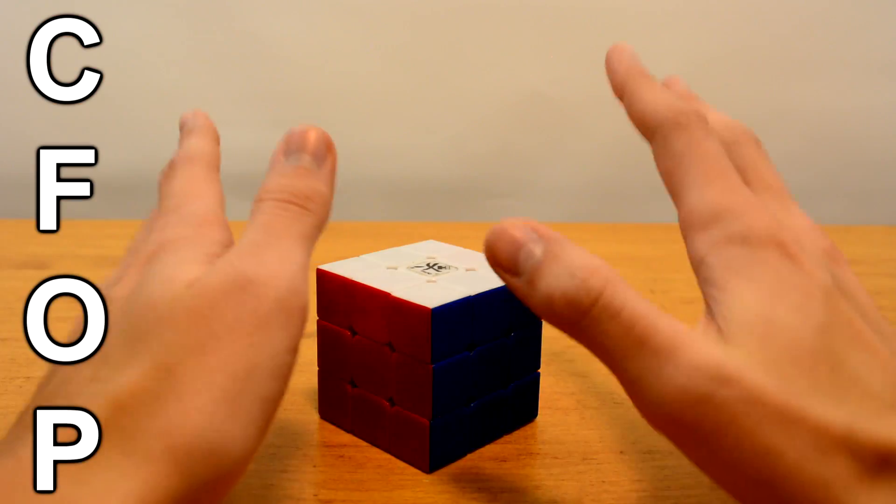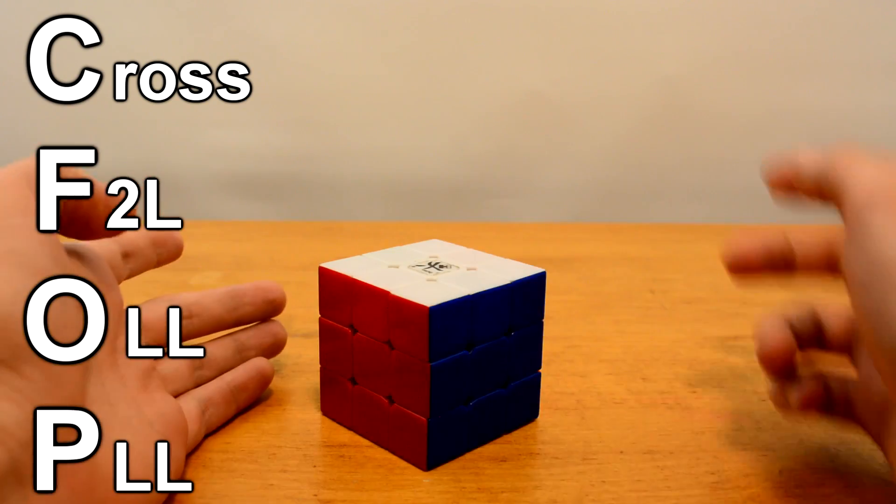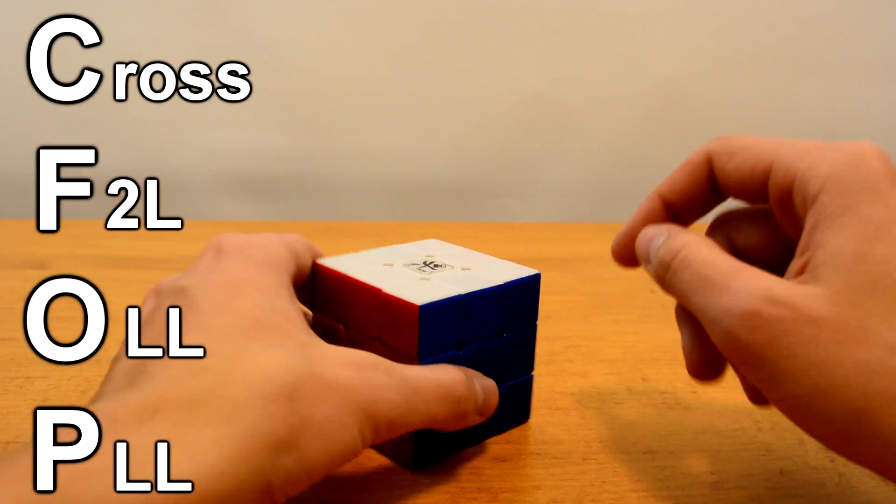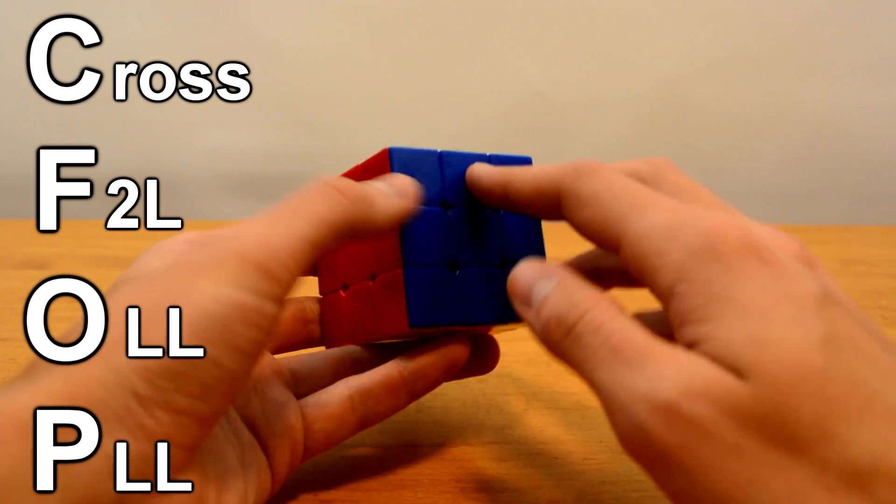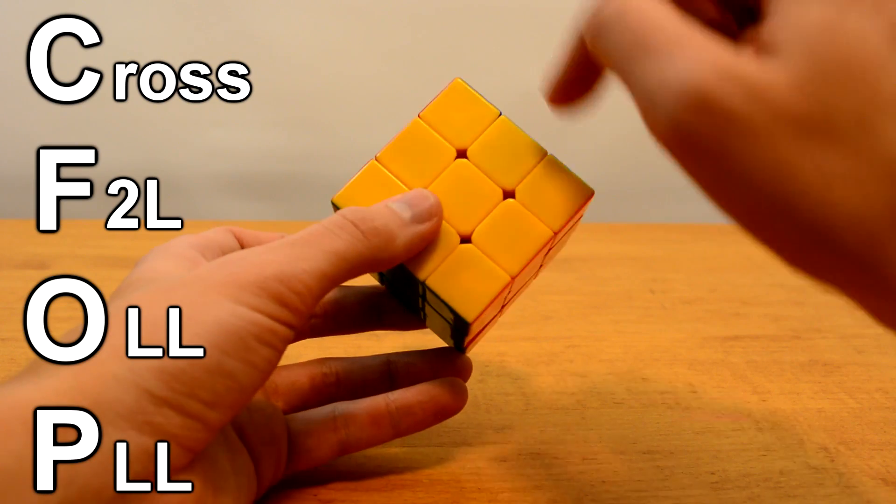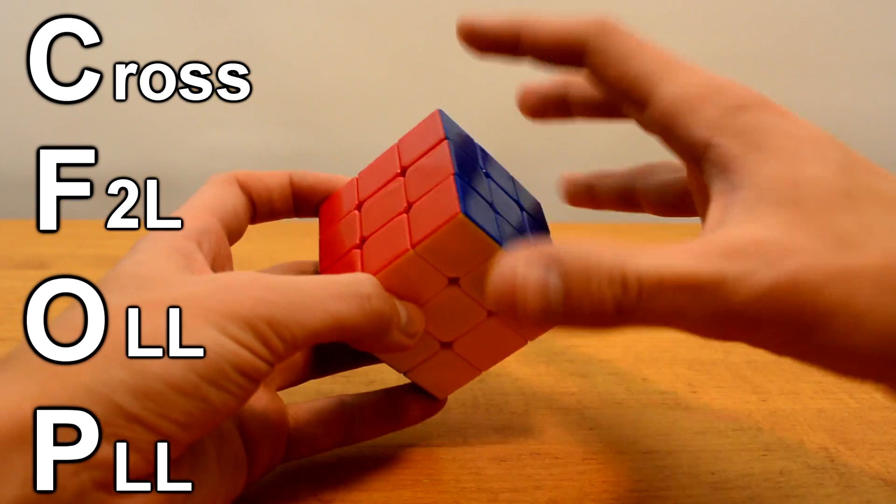The methodology that's going to be described in this series of videos is called CFOP. Now CFOP stands for Cross, F2L, OLL, and PLL, which is just a bunch of confusing acronyms. Essentially what it means is, instead of solving the cross, putting in the corners, building the second layer, and then doing the four steps to building the final layer, the entire system is condensed into these four steps.